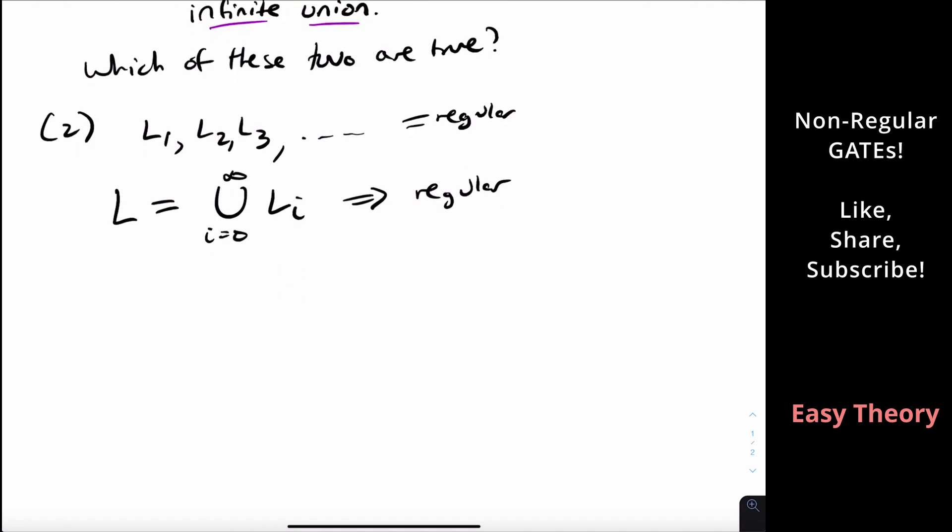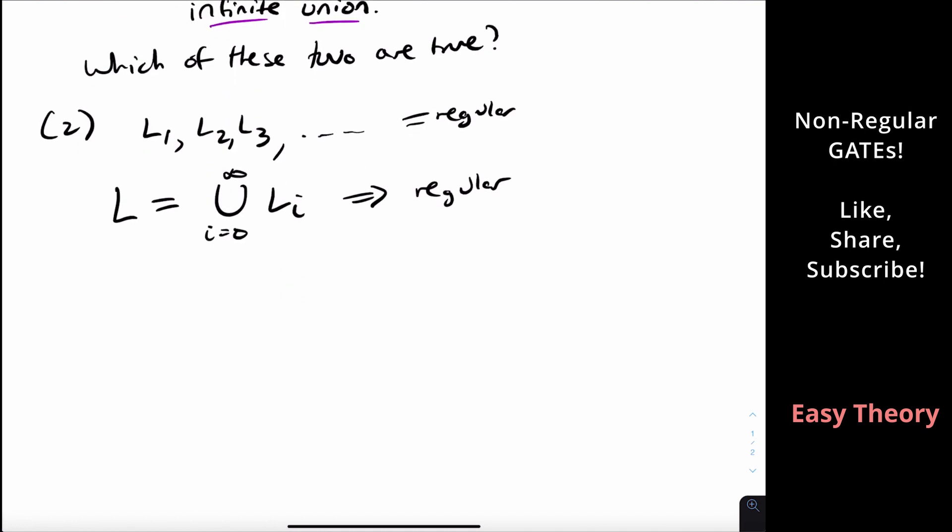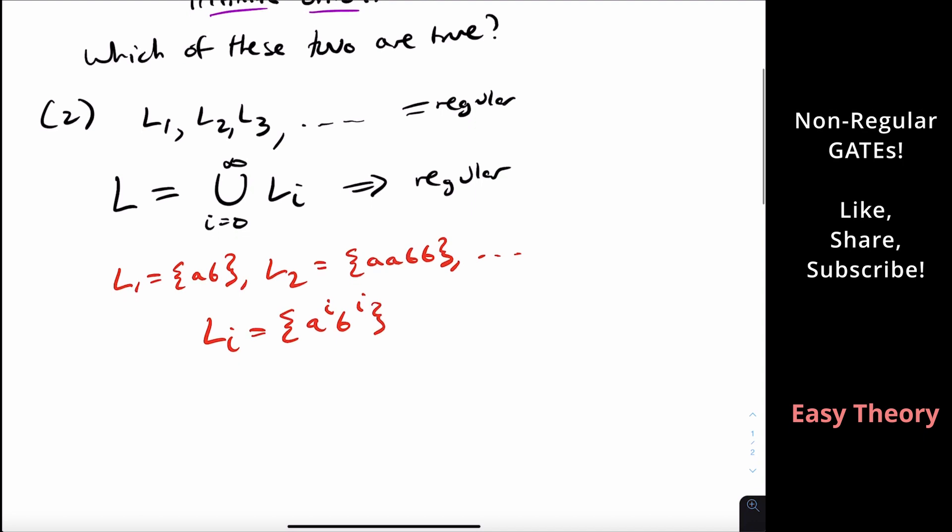It's actually quite tempting to say that this is true, but we've actually done a video to show that this is false before. Let's choose L1 to be the single string AB, L2 to be the language AABB, etc. So in general, Li is the language containing the string A^i B^i.